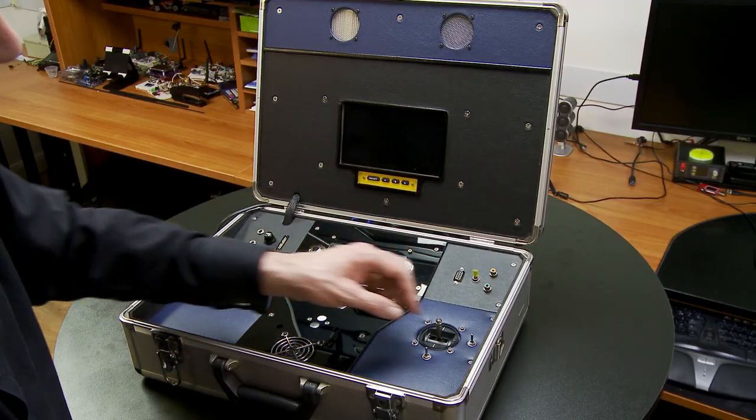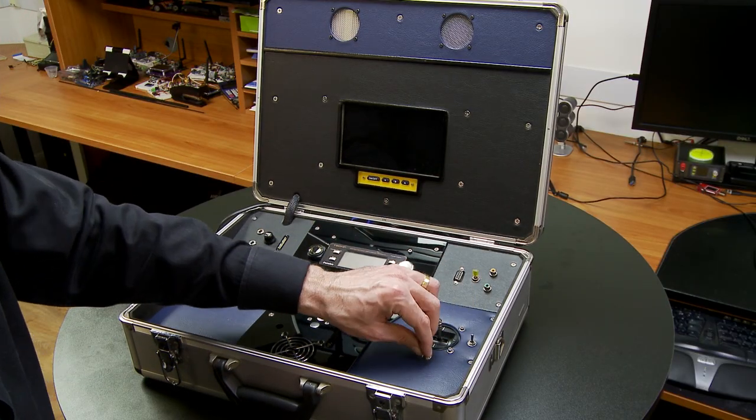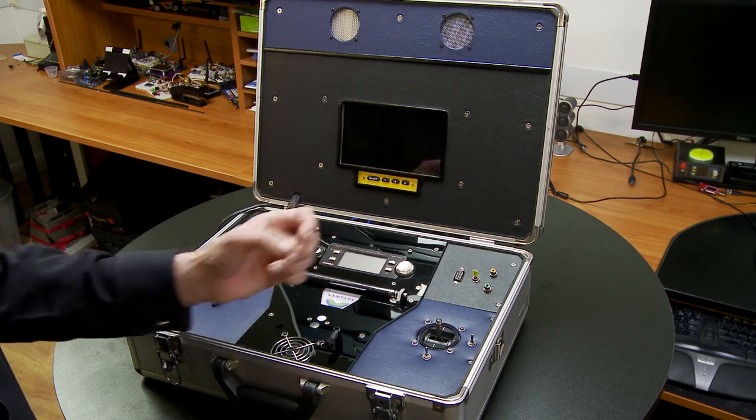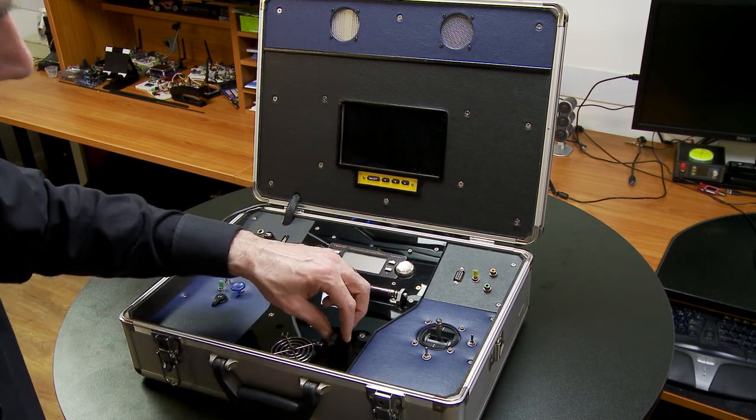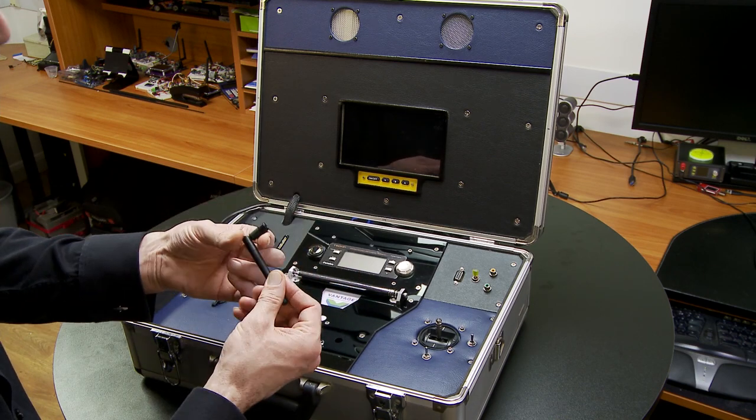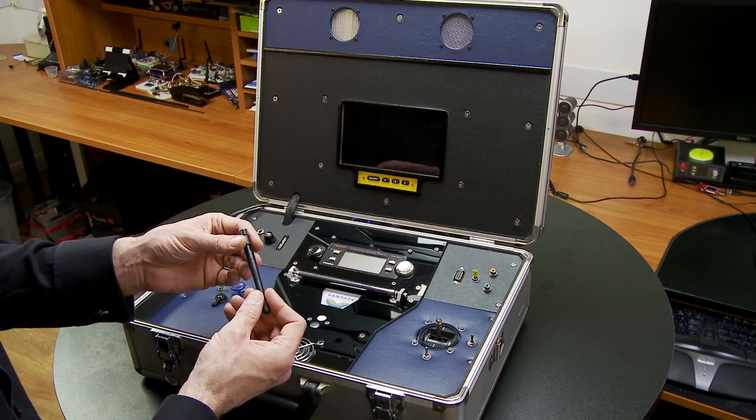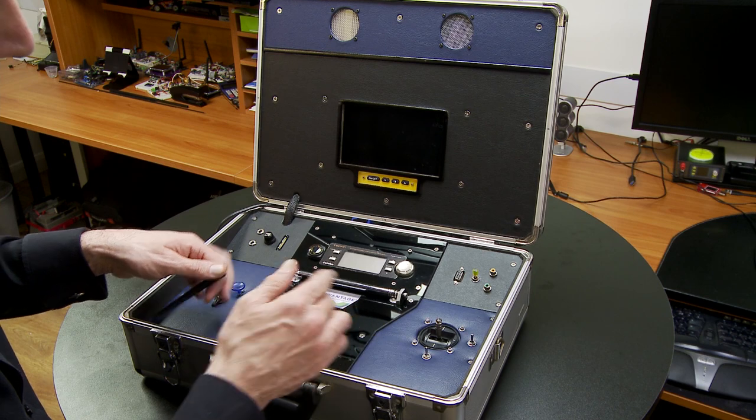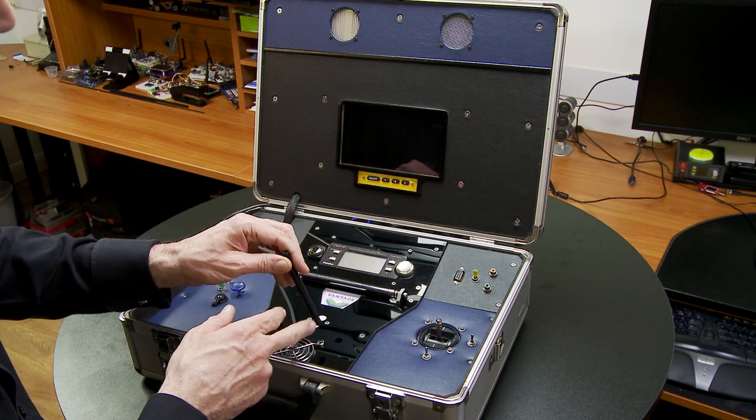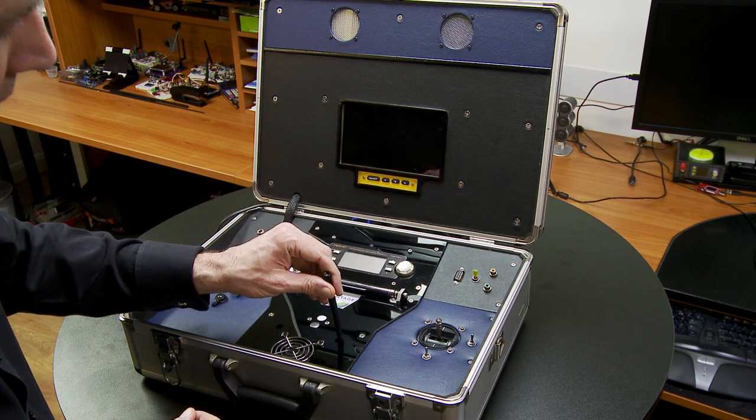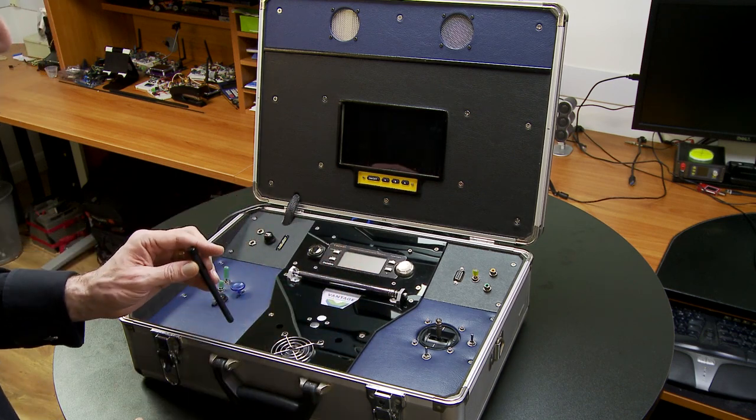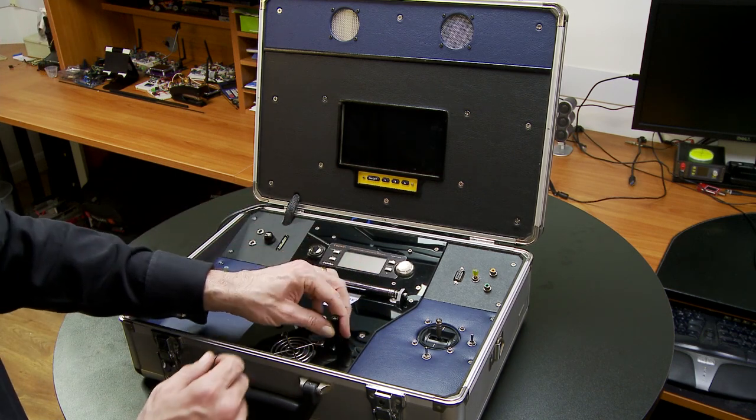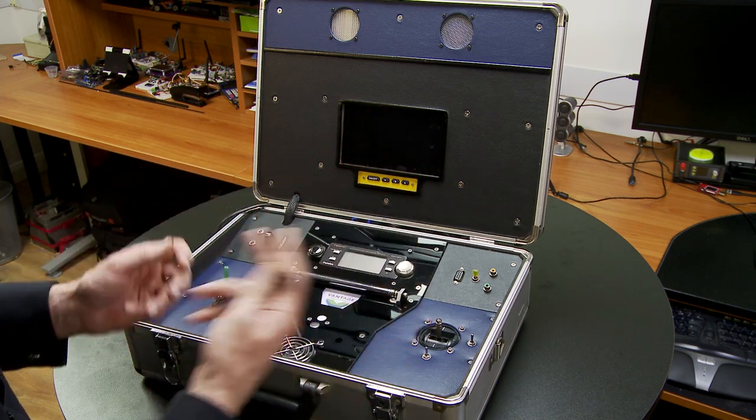And then here we have the typical gimbal that you'd expect to see for pan and tilt with the associated trim switches up and down, beep beep beep beep, just like you'd expect. And then here we have a 2.4 gigahertz antenna. Now unfortunately the batteries are flat but this is also the main power switch, so I don't know if you heard that.